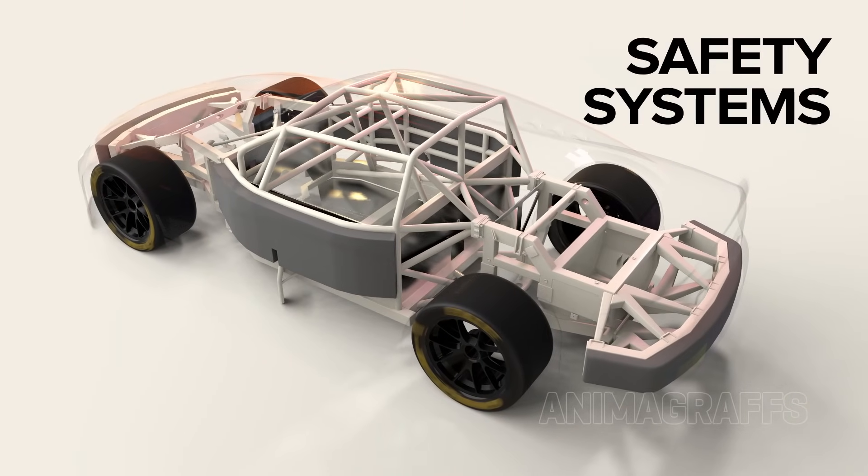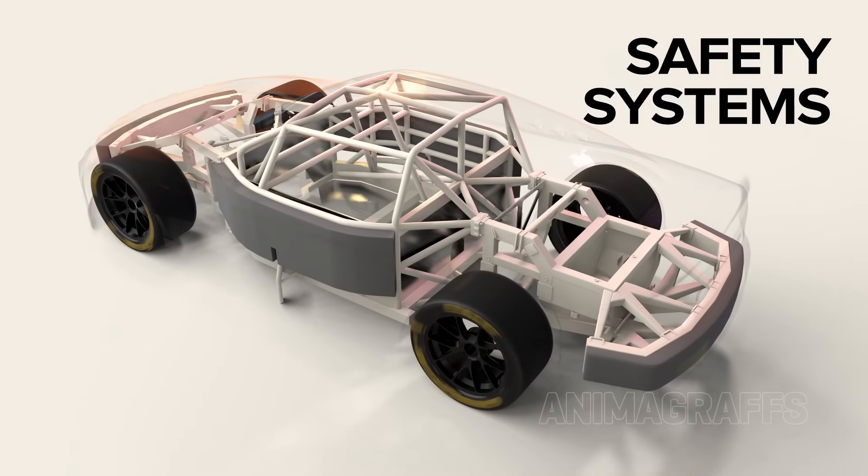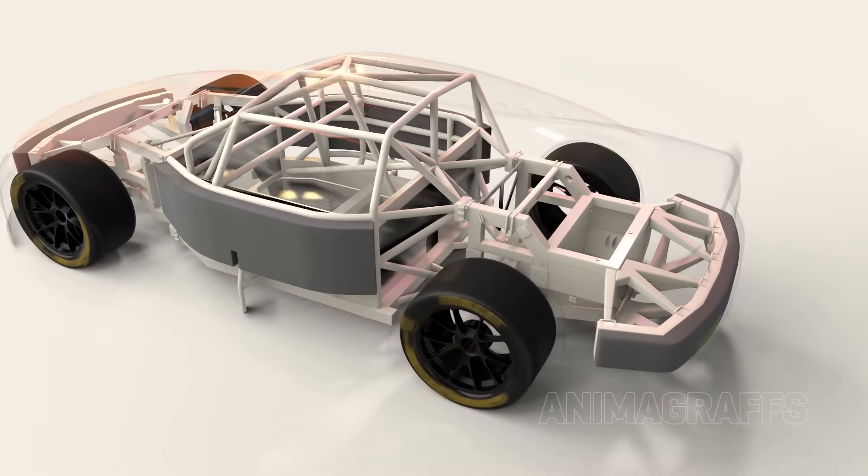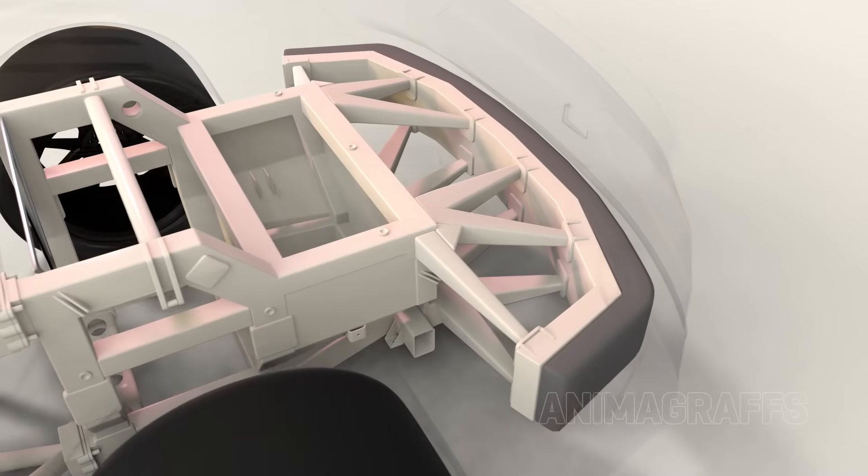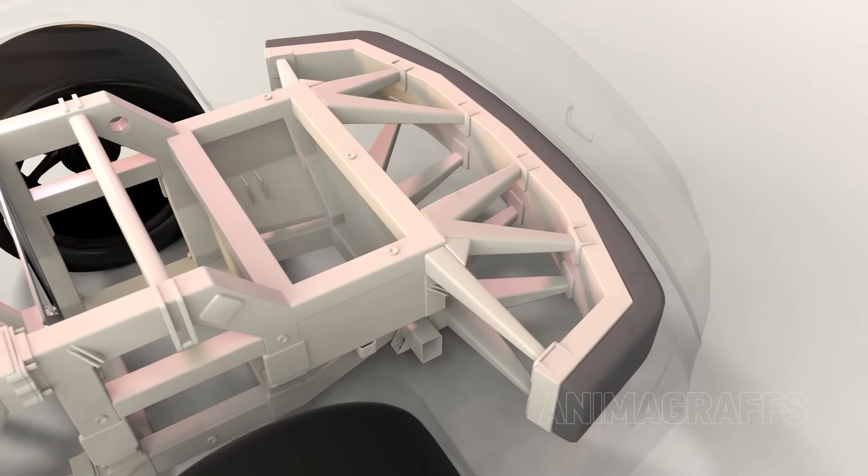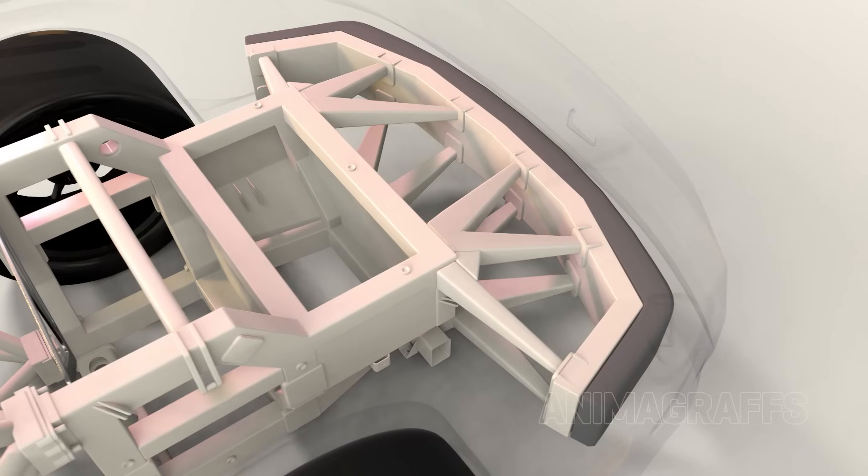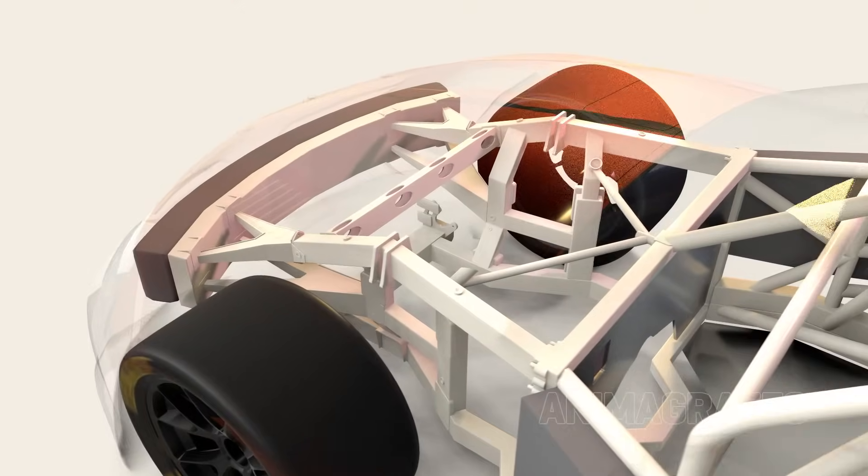Cup cars have robust safety systems. The aluminum tubes that connect the rear bumper to the rear clip create a framework that can absorb violent impacts. The front bumper is attached in a similar way.